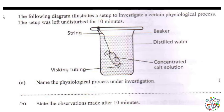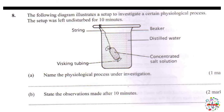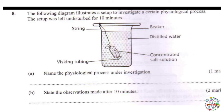Moving on to question 8: the following diagram illustrates a setup to investigate a certain physiological process. The setup was left undisturbed for 10 minutes. We have a visking tubing, which is a semipermeable membrane — it has tiny pores that allow small enough molecules to pass across. Water molecules are small enough to do so. Within the visking tubing we have a concentrated salt solution, immersed in a beaker containing distilled water.